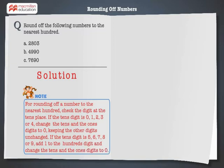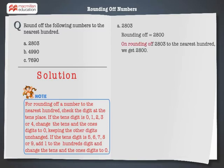Let's solve the first problem: 2,803. As we can see, the digit at the tens place is 0. Change the ones digit to 0. Hence, on rounding off 2,803 to the nearest hundred, we get 2,800.